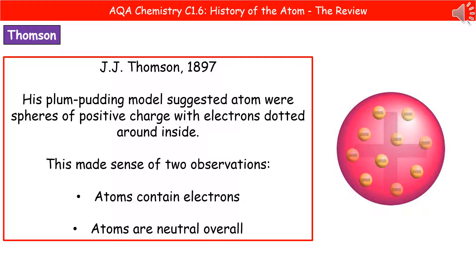The plum pudding model suggested that the atom was actually a sphere of positive charge — the big red cloud — with the electrons dotted around inside. It was called the plum pudding model because it looked like a plum pudding he was eating at the time. This model made sense of two observations: firstly, that atoms contain electrons, and secondly, that atoms are neutral overall, because the positive cloud is cancelled out by the negative electrons scattered through it.